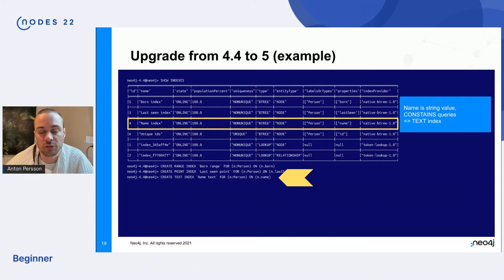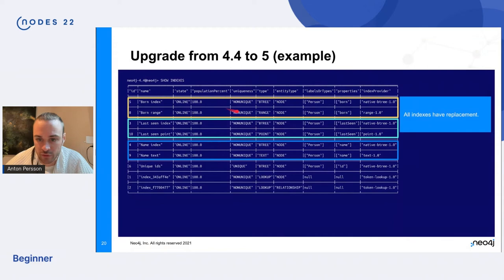And I should maybe also say that if you have a property where you both do lots of range scans and you do bounding box queries, for example, on the same property, then you can create both the range index and a point index. That's completely possible. Okay. So now we have replaced the first three. We see here, for example, that we have a Btree index and a range index on the same label and property combination here, but we still have the constraint left.